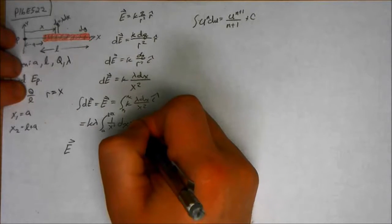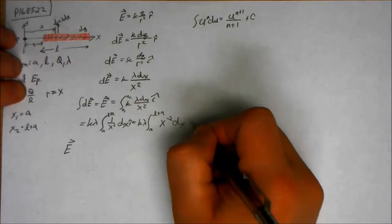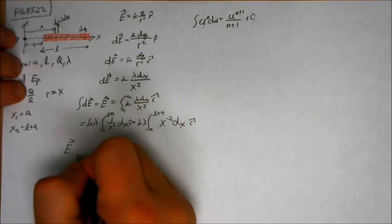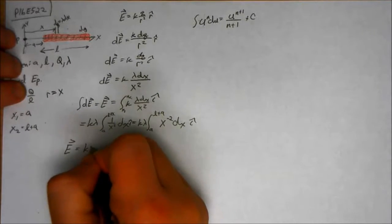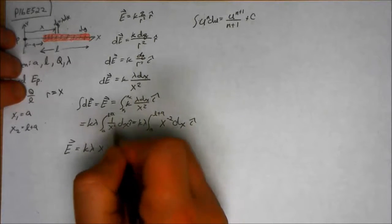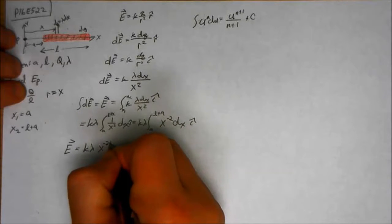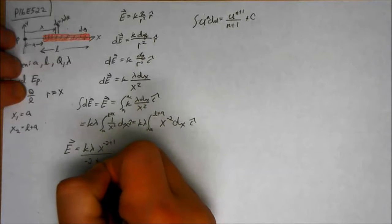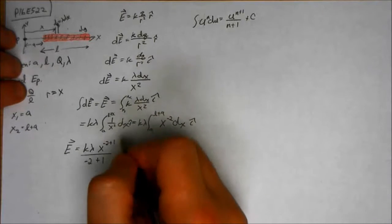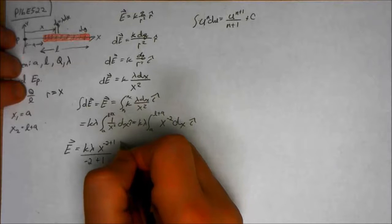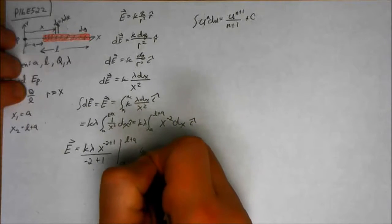Oh gosh, I forgot my unit vectors. So I have to add one to this exponent. And the electric field is K lambda x to the negative 2 plus 1 over negative 2 plus 1. And that's evaluated from A to L plus A i-hat.